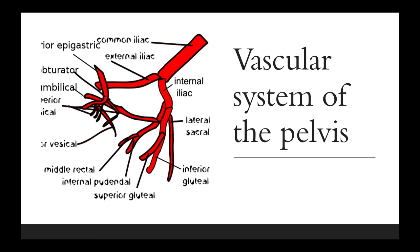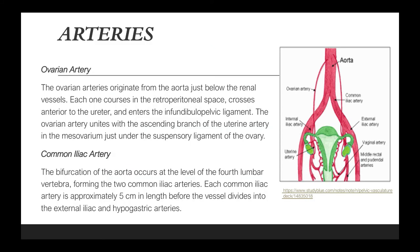For the last part of this lecture, we talk about the vascular system of the pelvis. The ovarian arteries originate from the aorta just below the renal vessels, each coursing into the retroperitoneal space, crossing anterior to the ureter, and entering the infundibulopelvic ligament. The ovarian artery unites with the ascending branch of the uterine artery in the mesovarium under the suspensory ligament of the ovary.